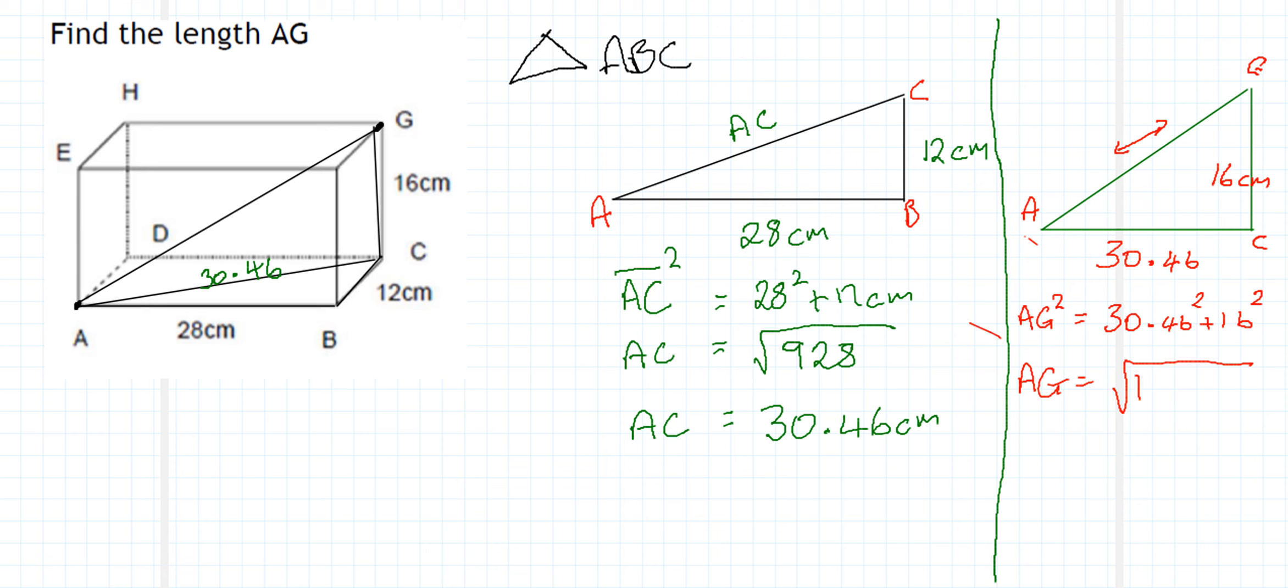And when we square root that answer, because that's what we want, we end up that AG, the length of AG, is equal to 34.41, if we do it to two decimal places, centimeters in length.